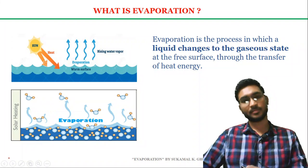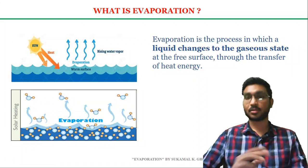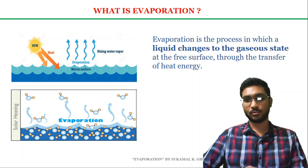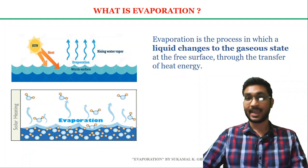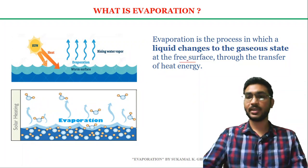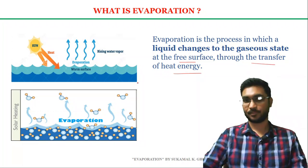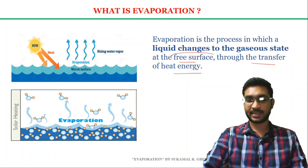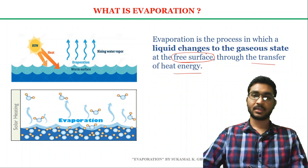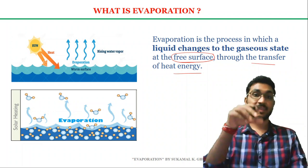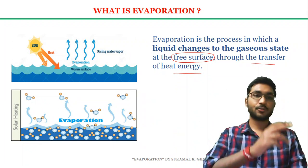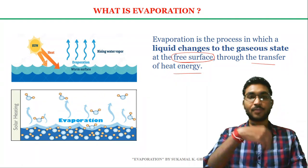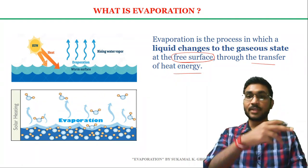So what is evaporation? Evaporation is a process in which water molecules change from liquid state to gaseous state or vapor state at the free surface of the water body through the transfer of heat energy. This 'free surface' term is very significant in this definition, because the water molecules present at the surface of the water body escape into gases and travel to the atmosphere due to the transfer of heat energy.